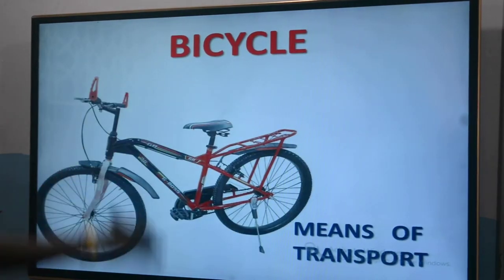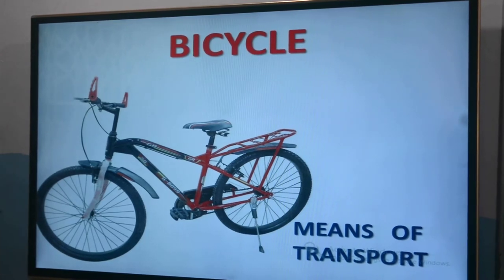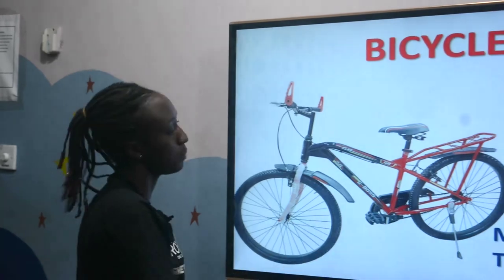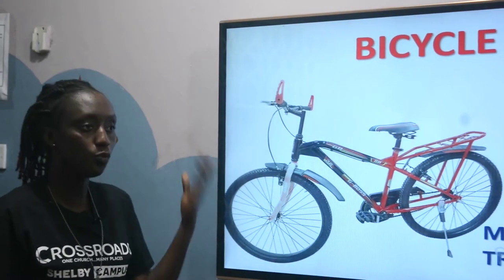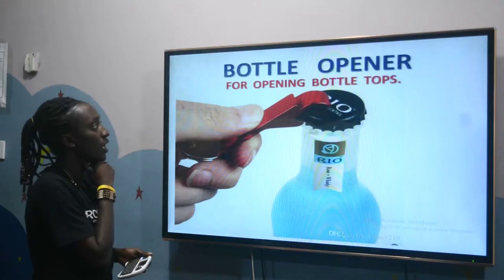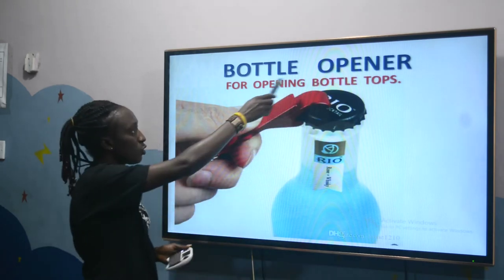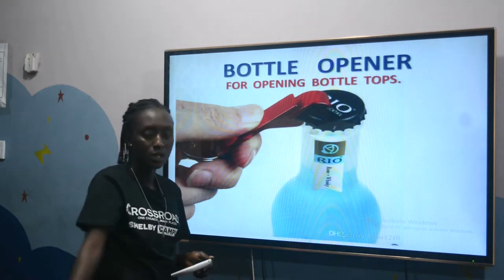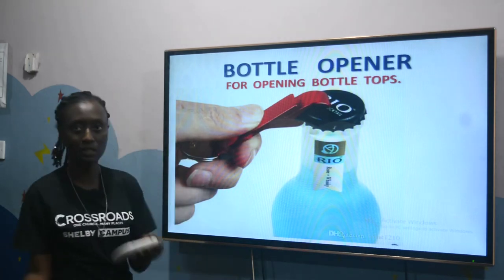We have a bicycle. I know that majority of us have bicycles in our various homes. The bicycle serves as a means of transport. If you want to move from your home to your friend's house, you can use a bicycle — that will help you reach that place faster. We have a bottle opener. We use it for opening bottle tops, for example, minerals such as Fanta.